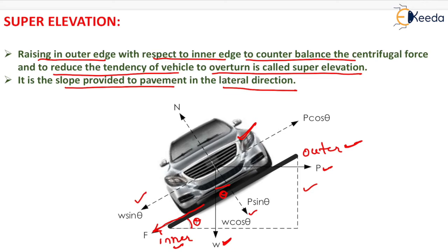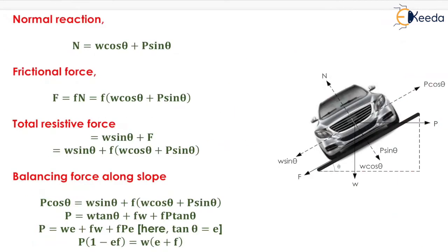On resolving the centrifugal force P, we get P cos theta and P sin theta as components. The normal reaction acting upward is equal to W cos theta plus P sin theta, and the frictional force F equals the coefficient of friction f multiplied by the normal reaction N. So N equals W cos theta plus P sin theta.